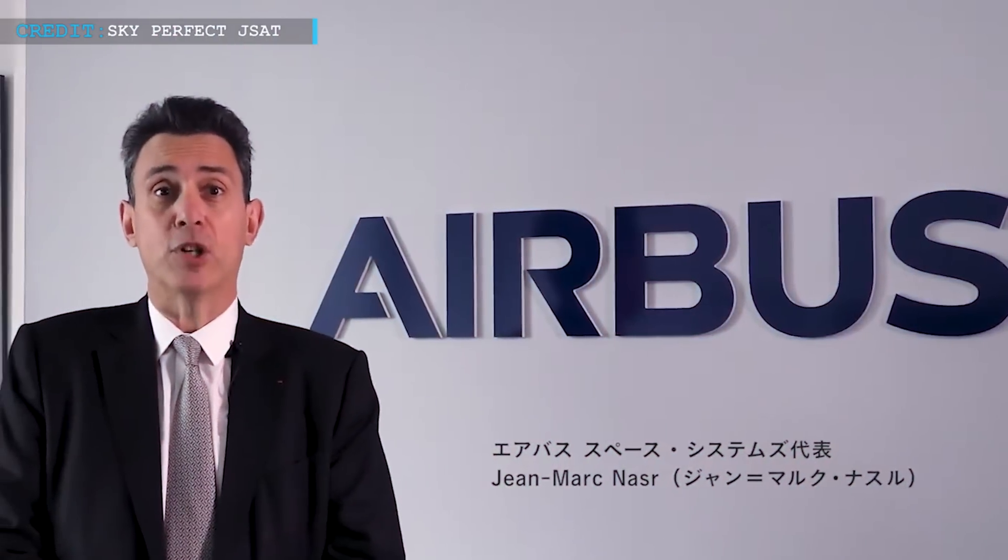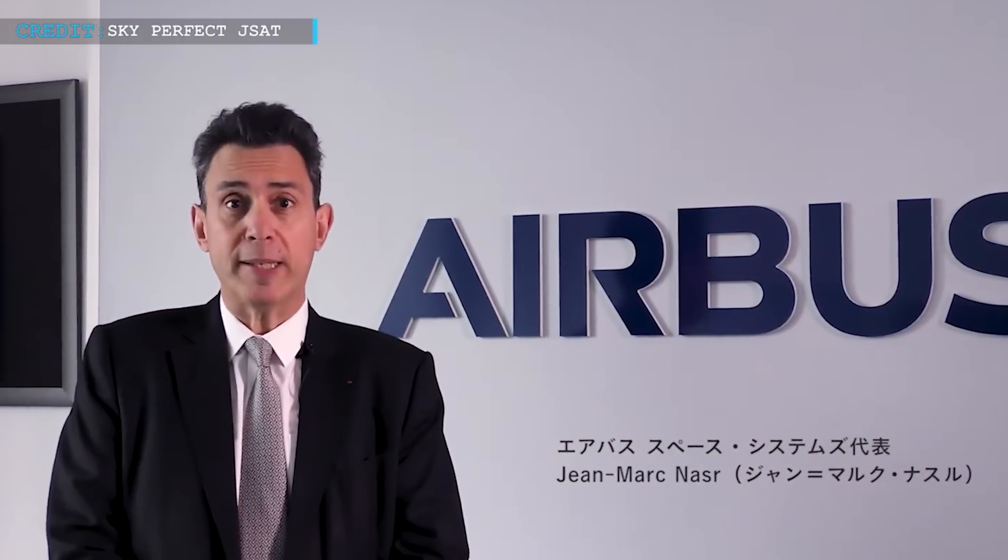Although Sky Perfect JSAT withheld information regarding the anticipated weight of its new satellite, other satellites that are in the works that will use the Airbus 1SAT Superbird 9 are anticipated to weigh around 3 tons, around 6,600 kg.